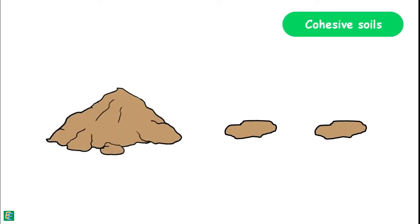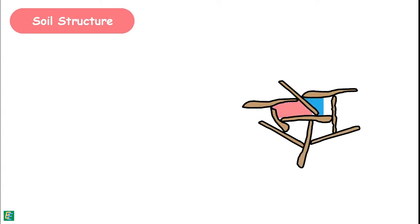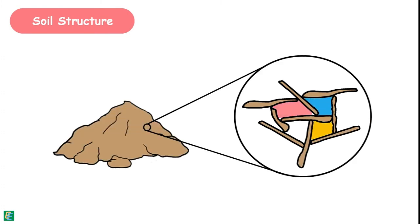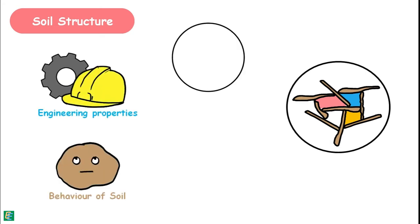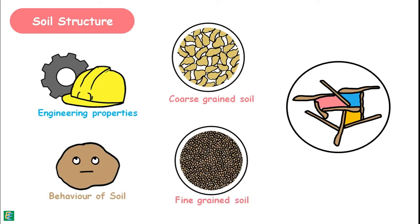Cohesive soils are soils whose particles stick to each other, bonded together by some force. Soil structure means the geometrical arrangement of soil particles in a soil mass. Engineering properties and behavior of both coarse-grained and fine-grained soils depend upon this soil structure.